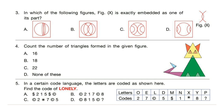Question 4: Count the number of triangles formed in the given figure. You can pause the video and count the number of triangles. Correct answer is option D — none of these. Question 5: In a certain code language the letters are coded as shown here. Find the code of 'lonely'. Correct answer is option B.